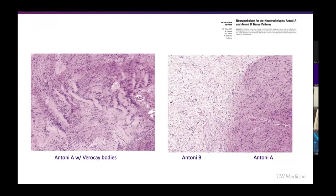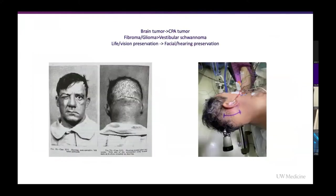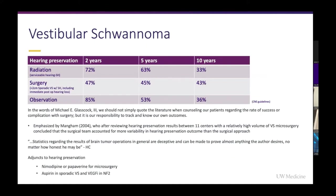The Antoni B microcystic regions may coalesce and form the larger macrocystic cysts we see during surgery and on MRI. Over the past hundred years, we've seen the transition from a rudimentary understanding based on location, to improved knowledge of location and histology, and we've really gone from life and vision preservation to facial and hearing preservation. The dilemma now is hearing preservation — what do you do with an incidentally found vestibular schwannoma without brainstem compression, identified on routine workup for sensorineural hearing loss or tinnitus?